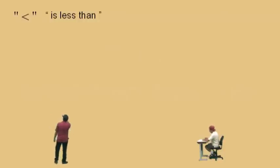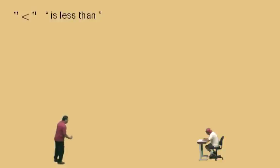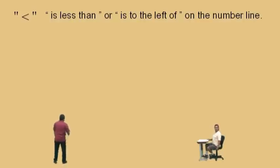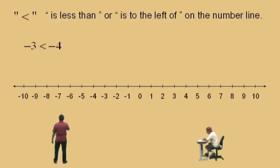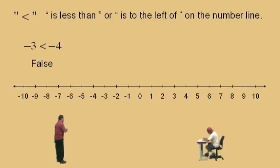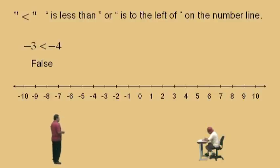Here's our next symbol, Charlie, right there. That symbol represents the word statement 'is less than.' Now on a number line, Charlie, what does it mean to be less than? To the left? That's right — to the left of. Let's bring out a number line and try this problem. Is negative 3 less than negative 4? Is that true or false? False. That's right, it's false. Negative 3 is not less than negative 4. In the previous problems, we found out that negative 3 was actually greater than negative 4, because negative 3 is to the right of negative 4. So this is a false statement.